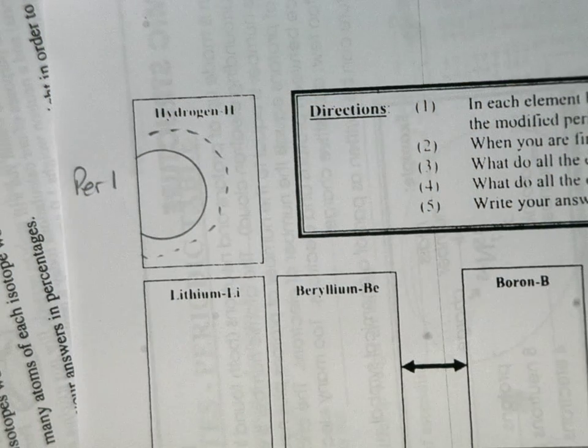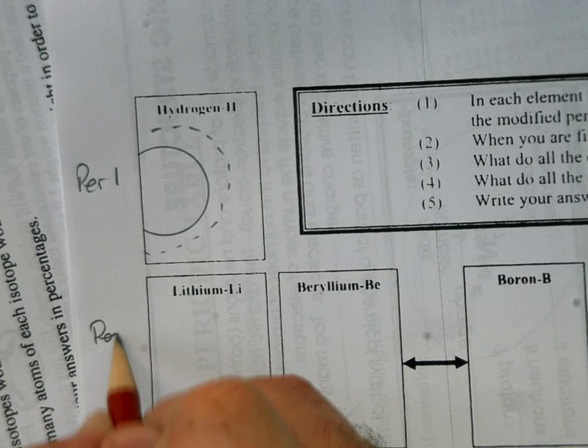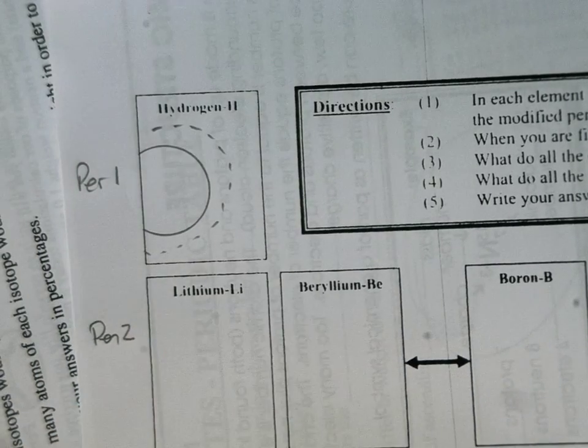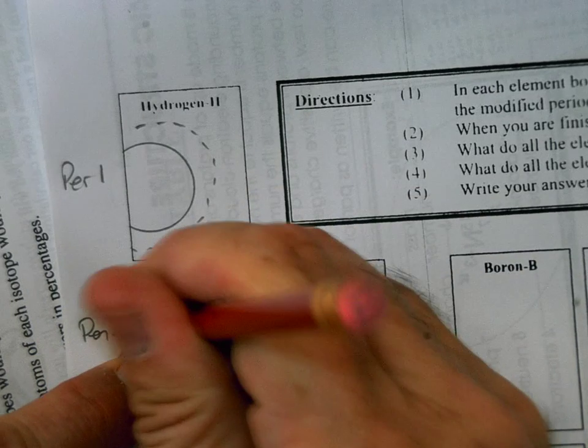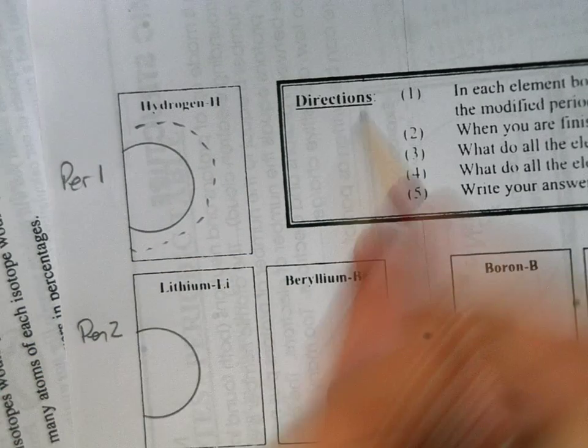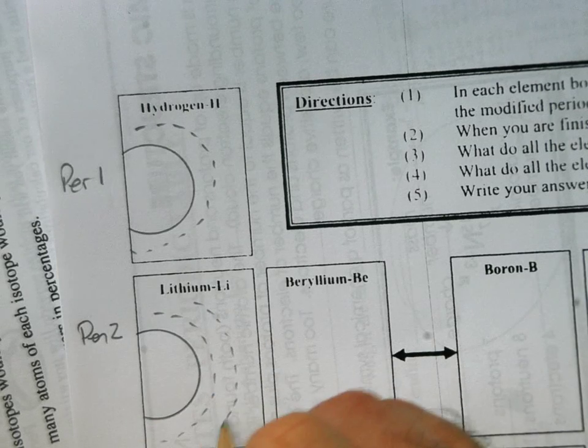When you get working on this, you can use color pencils or whatever. Let's label period two down here, which means you have two shells. So I'm going to get this kind of pre-set up here. First shell and second shell.